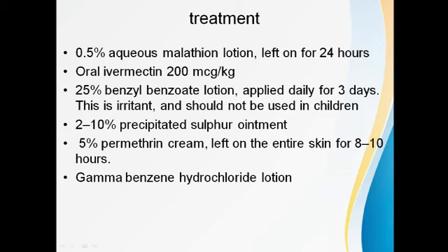Aqueous malathion lotion can also be given. Oral ivermectin is a very common anti-parasitic agent acting as a neurotoxic poison for the mite. It is given at 200 micrograms per kg body weight in two doses — one today and one after one week — because the hatching period of the mite is around seven to ten days, so repeat treatment is needed to kill newly hatched mites.